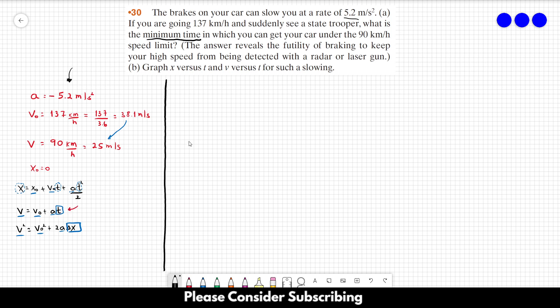So that's the equation that we have to use for letter A. So V is equal to VO plus AT. So T is equal to V minus VO over A. So V is the final speed is 25. The initial speed is 38.1. And the acceleration is minus 5.2. And this gives us roughly 2.5 seconds. So this is the answer of letter A.